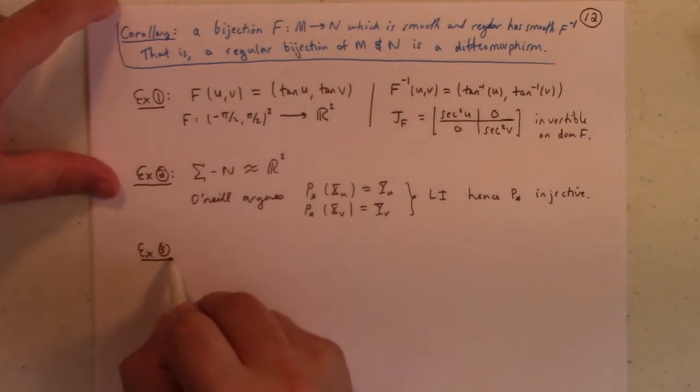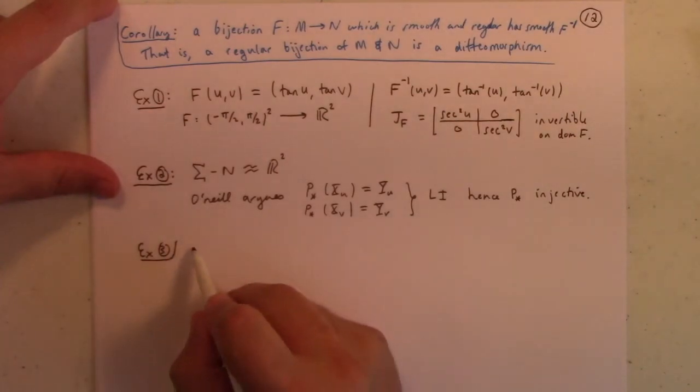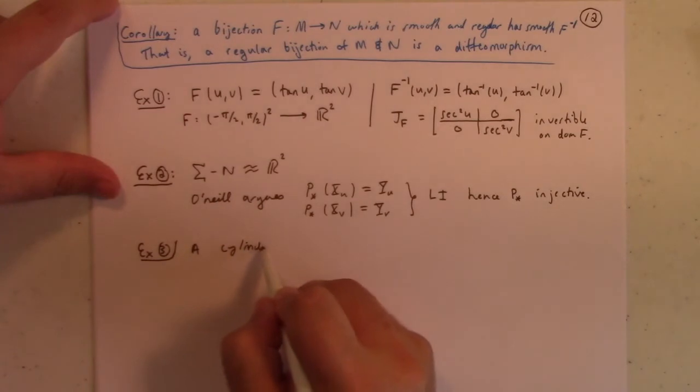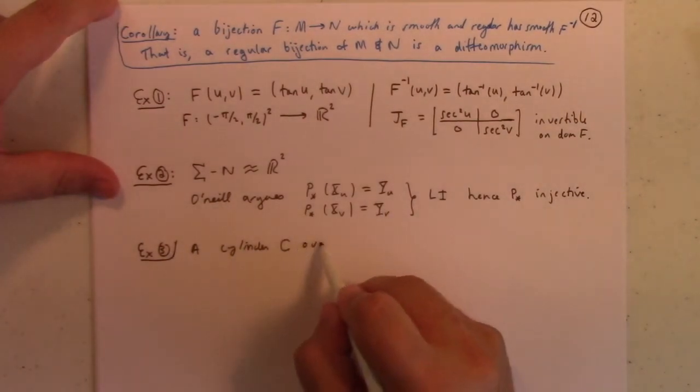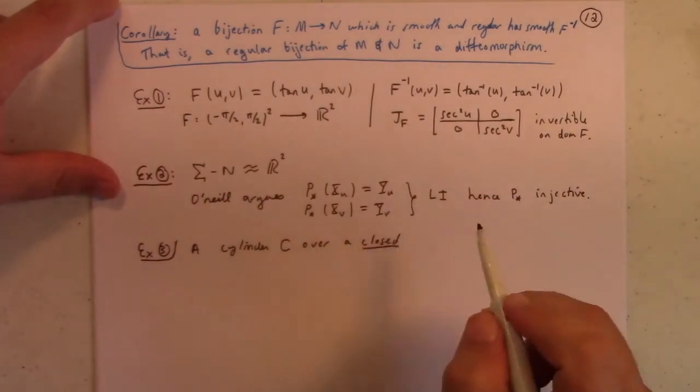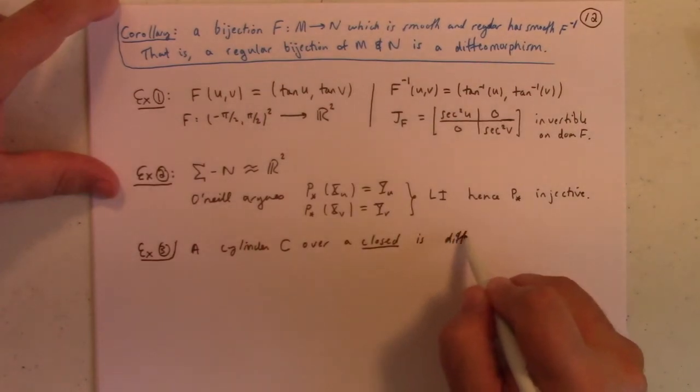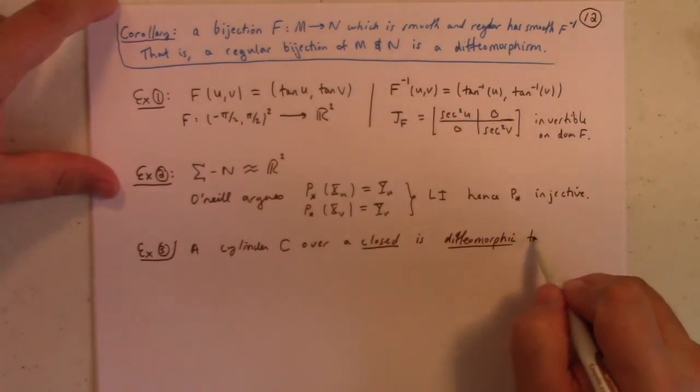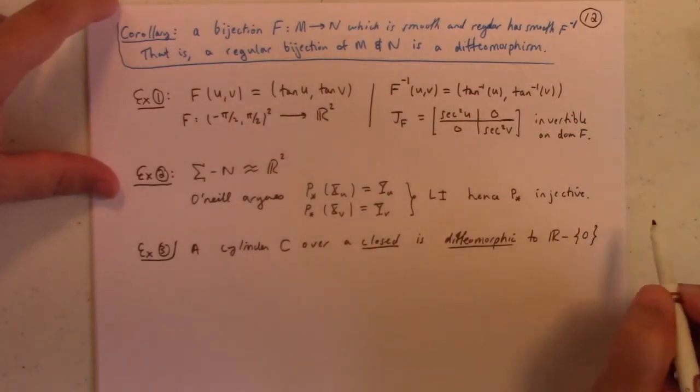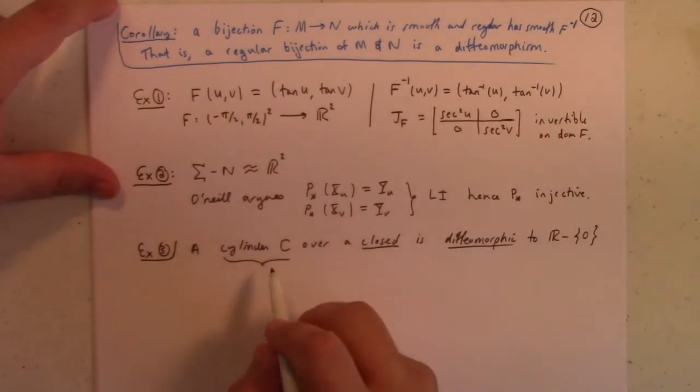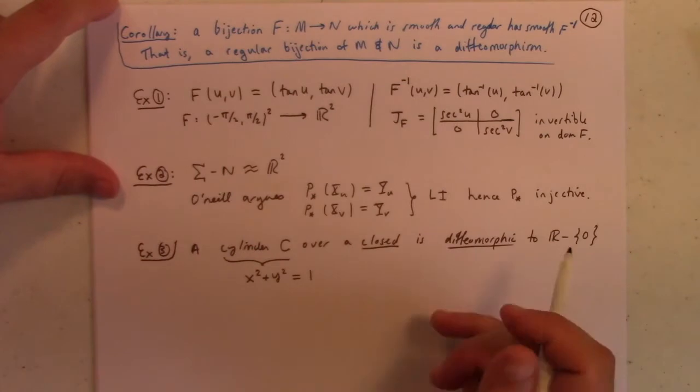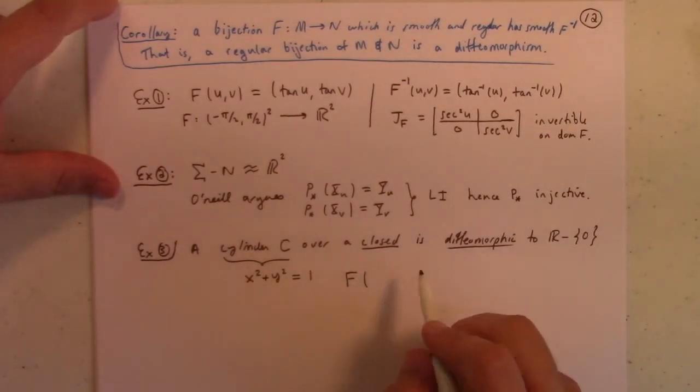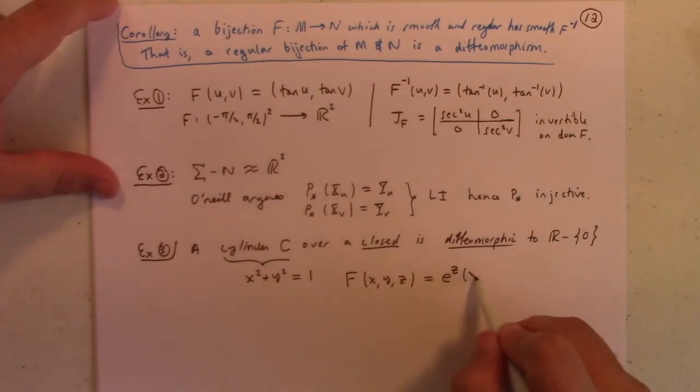Example three, I like. It's a really nice example. A cylinder, so the cylinder is what we're going to call C, over a closed curve. Closed curve just means the curve comes back to where it started, is diffeomorphic to the plane with a point deleted. We'll throw out the origin. And, to make the cylinder, to make our example simple enough, we'll look at the cylinder, x squared plus y squared equals 1. And, the diffeomorphism O'Neill gives us here is f of (x, y, z) equals e to the z times the vector (x, y).